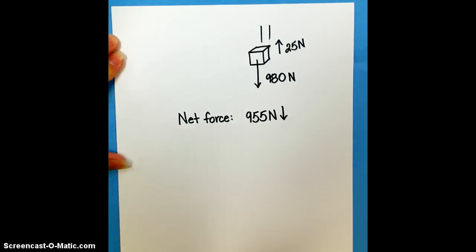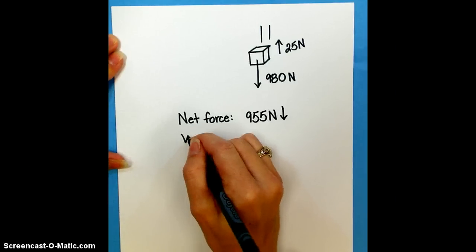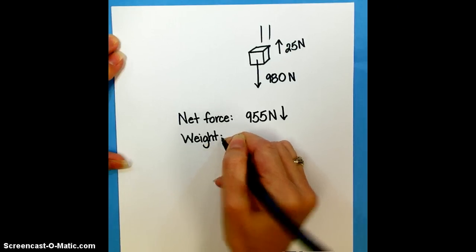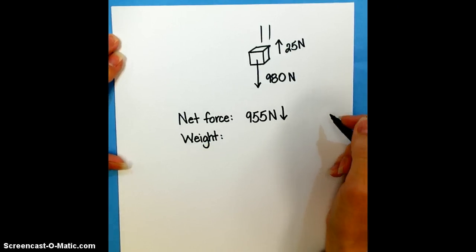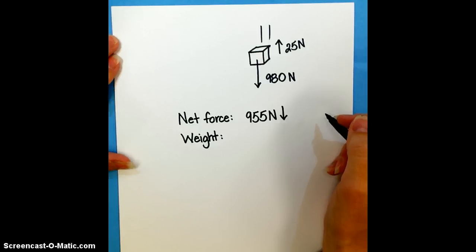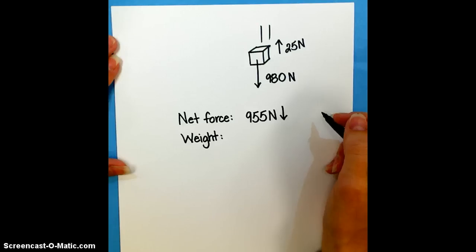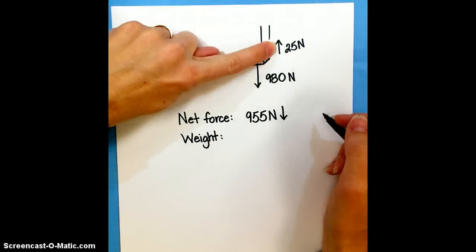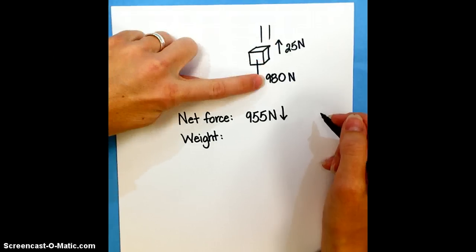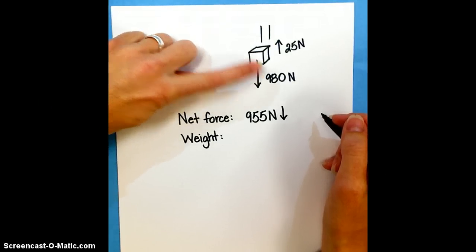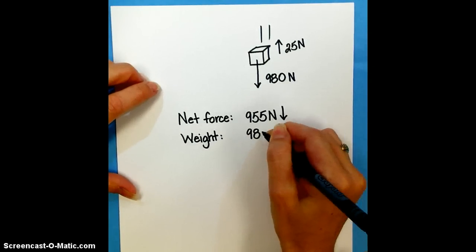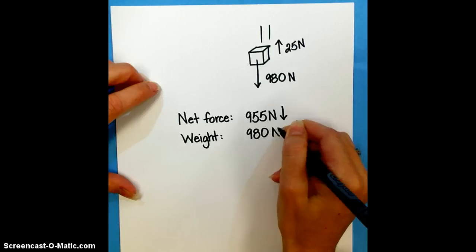The next thing that we want to know is what is the weight of this box? Well, if you look at it and you think about what weight is, we know that weight always acts straight down towards the center of the earth. And so when I look at my diagram, it's obviously not going to be this force, but the weight is going to be the one indicated by an arrow drawn straight down. So our weight is 980 newtons.